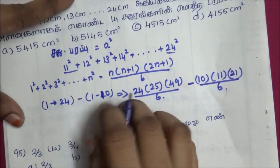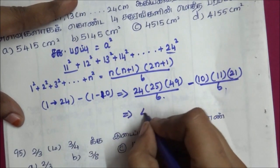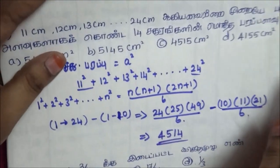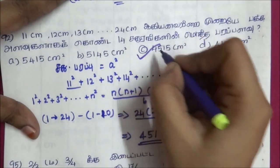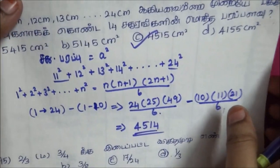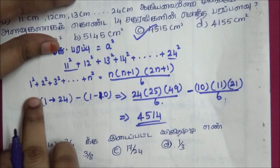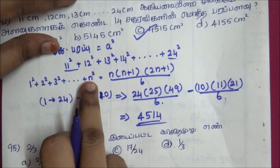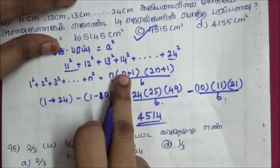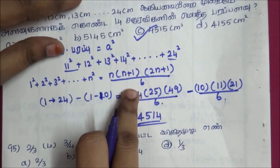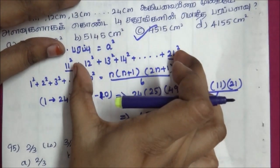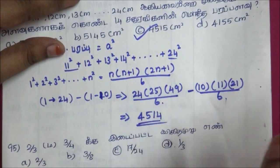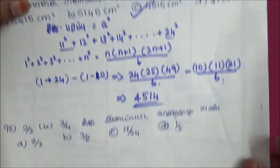Simplify and the answer is 4515. So the answer is 4515. Now we've seen the formula: 1 squared plus 2 squared plus 3 squared up to n squared equals n(n+1)(2n+1) divided by 6. We directly hold the formula, use it, and get the answer. So that's the question done.